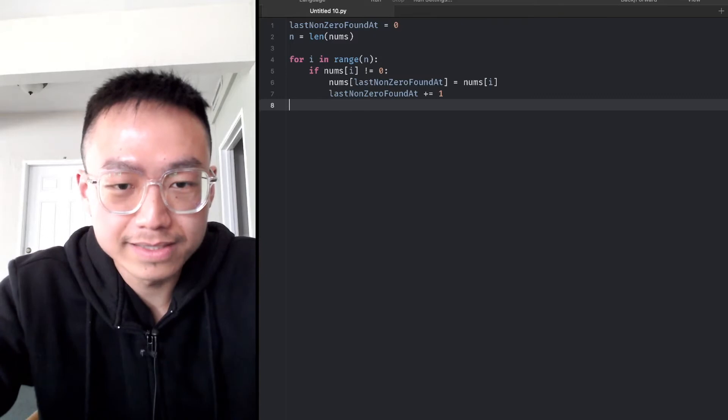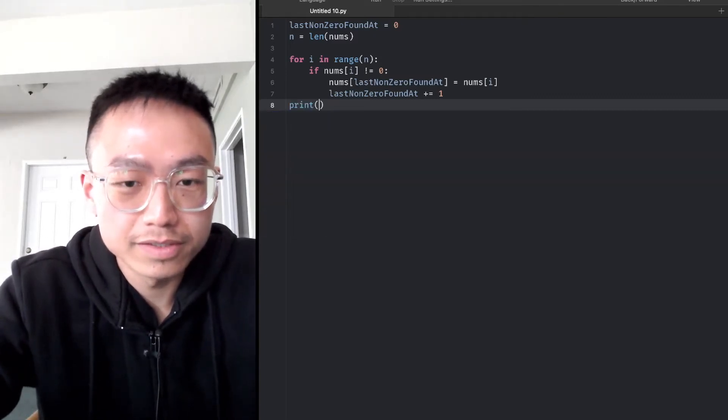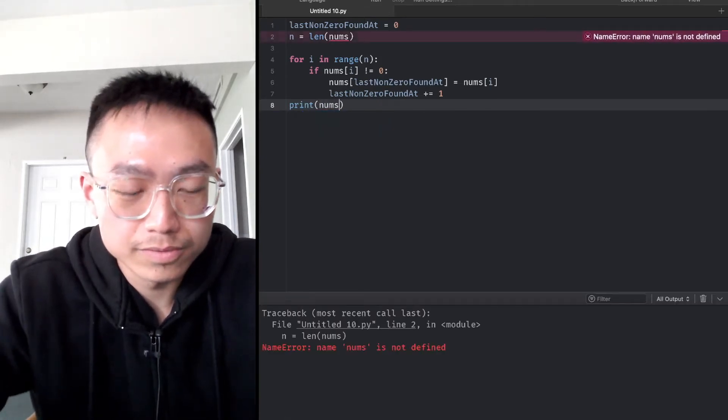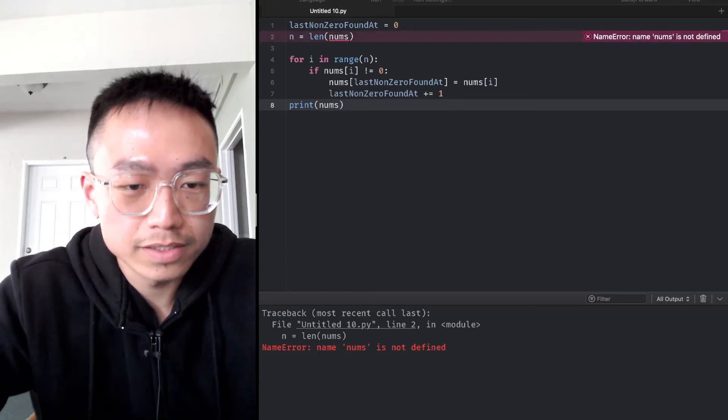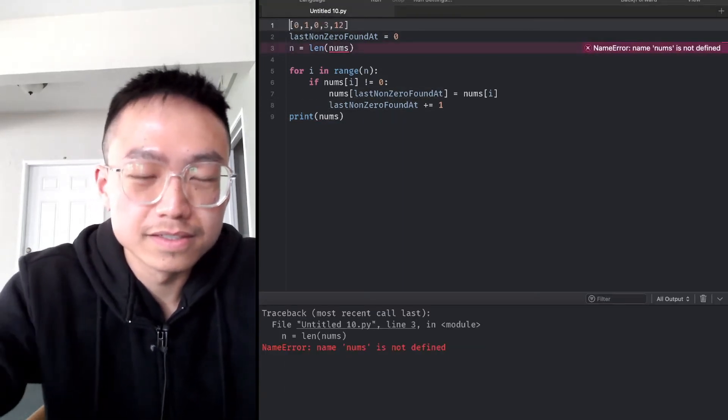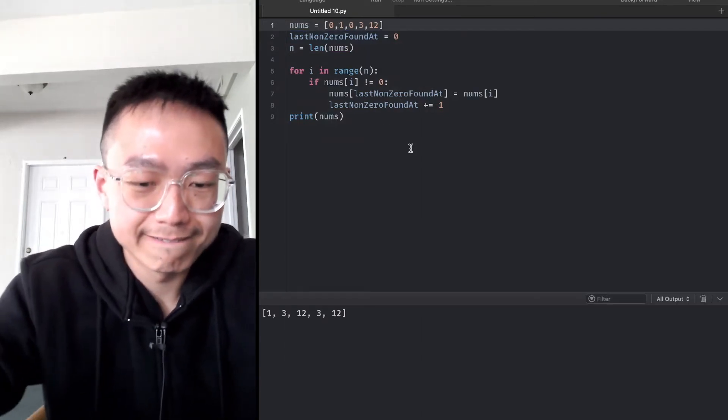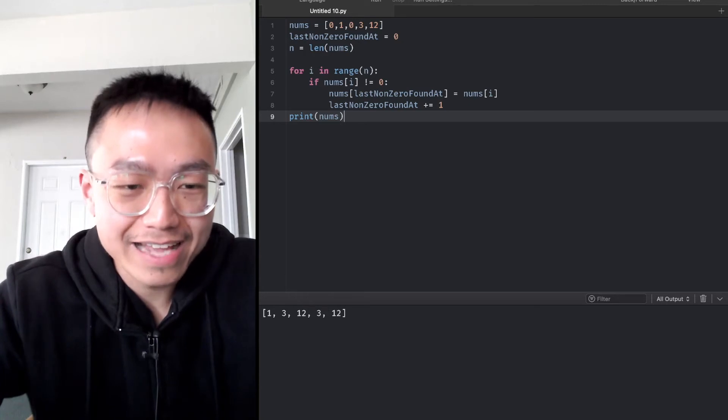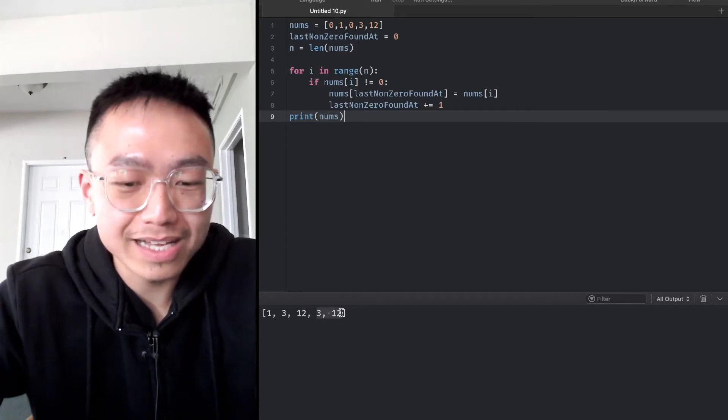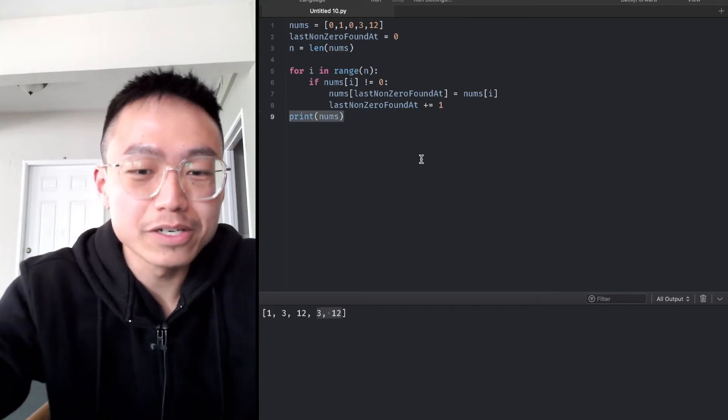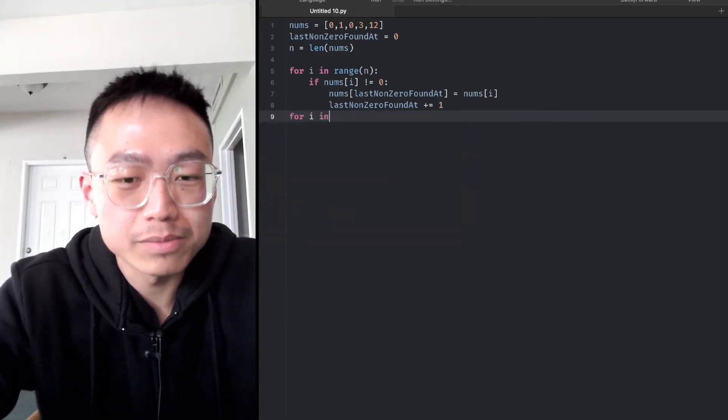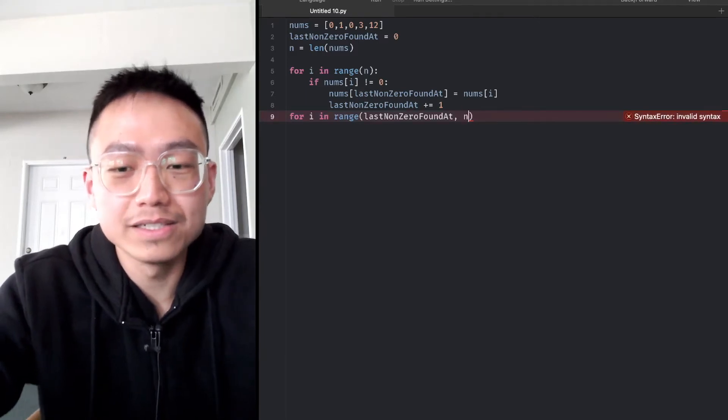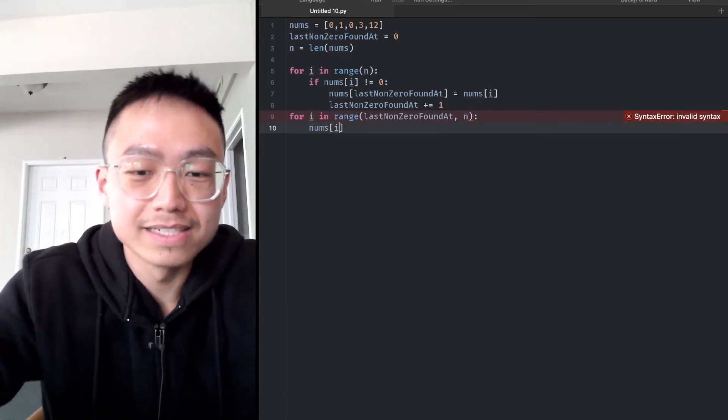Let's make a test like a print. We need to give it data. It will first bring the elements to the front of it. Then we can fill the last part with zeros. From the lastNonZeroFoundAt to the end, nums at i equals zero.